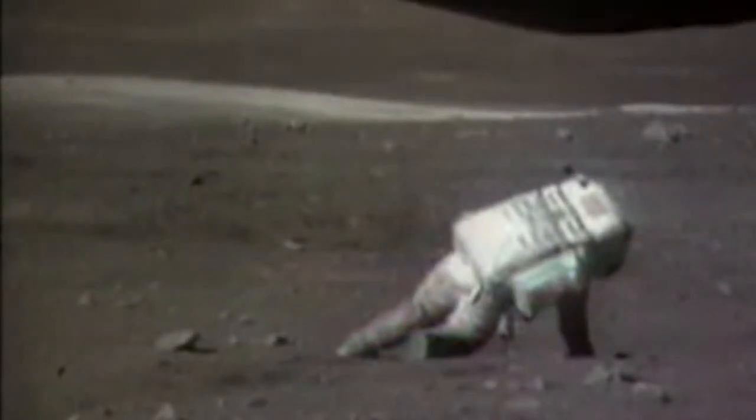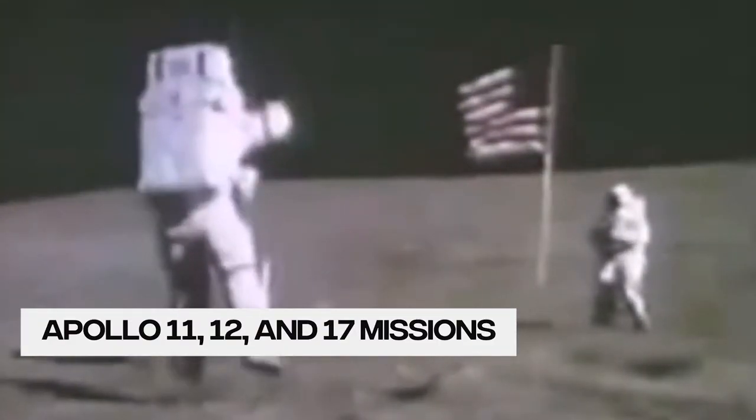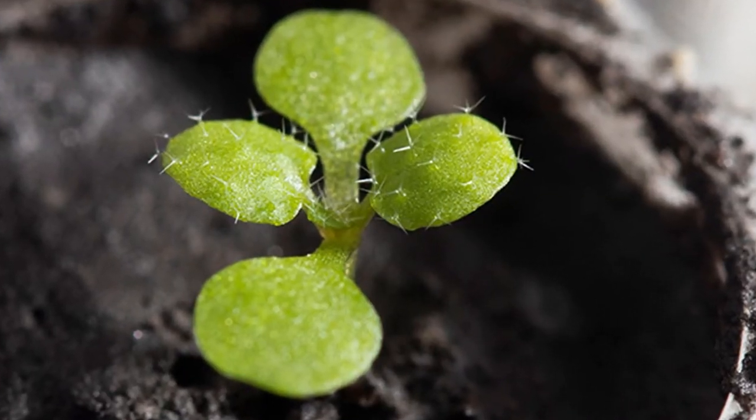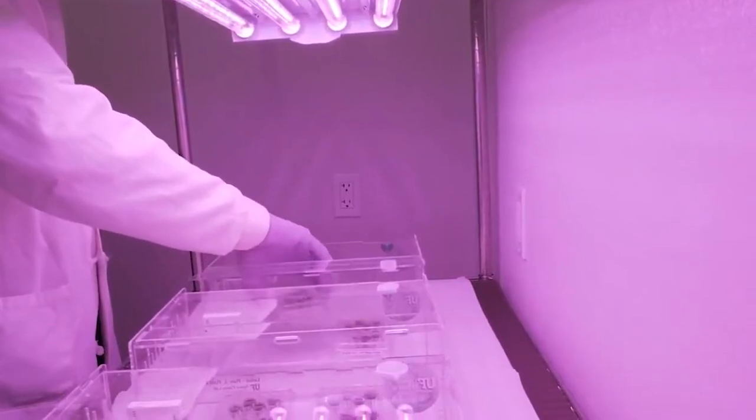The researchers used regolith samples acquired during Apollo 11, 12, and 17 missions between 1969 and 1972 for this investigation. They cultivated a common lab specimen called Thale Cress in each of the three samples.